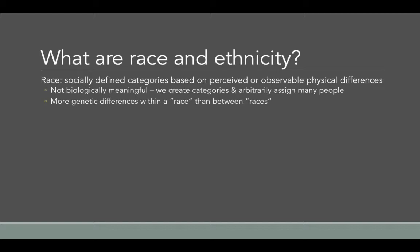This is especially true when you look historically at how white and black people have been classified in the United States. At the end of the 1800s, a large group of immigrants came from European countries that people already in America did not consider to be white — you saw large influxes of people from Ireland, Italy, and a large influx of Jewish folks, and at that time none of those people were considered white. But if you look at people of Irish, Jewish, or Italian descent today, we would almost exclusively categorize those people as white.